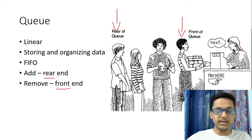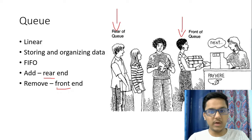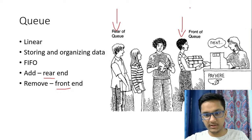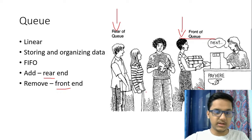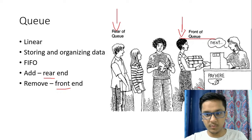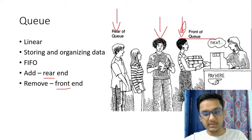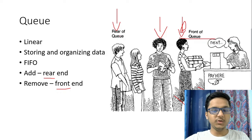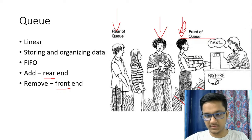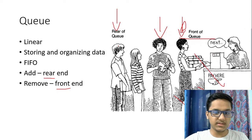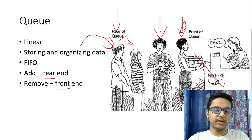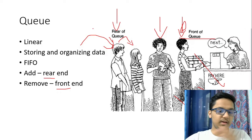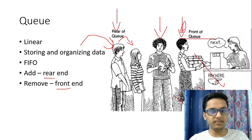The front pointer is used to remove elements and the rear pointer is used to add elements. The element you add first will be at the front, and the element added last is the rear one. When the person at the front leaves, the front pointer moves forward — removing elements. The rear end adds elements as new people join. So the rear pointer leads to the addition of new elements, and the front pointer is used to remove elements.